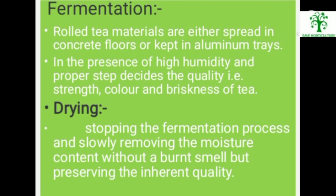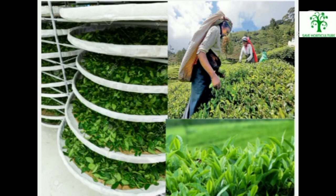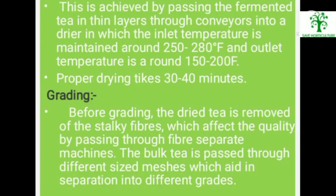Fermentation: rolled tea materials are either spread on a concrete floor or kept in aluminum trays. In the presence of high humidity and proper conditions, this step decides the quality like strength, color, and briskness of tea. Drying: stops the fermentation process and slowly removes the moisture content without a burnt smell but preserving inherent quality. Drying is achieved by passing the fermented tea in thin layers through conveyors into a dryer, with inlet temperature around 250–280°F and outlet temperature around 150–200°F. Proper drying takes 30 to 40 minutes.